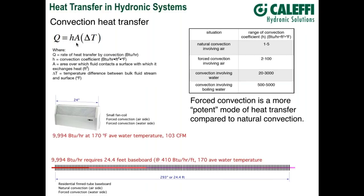Here's a good example in hydronics. That small fan coil up there is two feet wide. Looking at the specs, it'll produce just under 10,000 BTUs per hour with 170°F average water temperature and about 100 CFM airflow. Think about that — 10,000 BTUs per hour with a two-foot-wide heat emitter. To produce that same output with fin tube would require over 24 feet of standard residential fin tube, based on 410 BTUs per hour per foot at 170°F average water temperature.